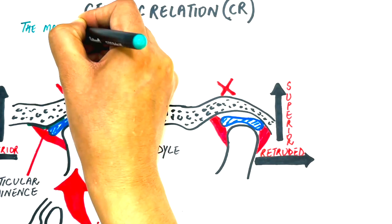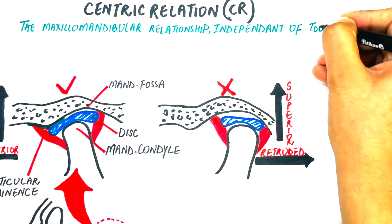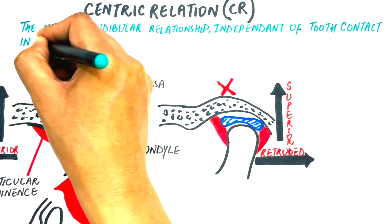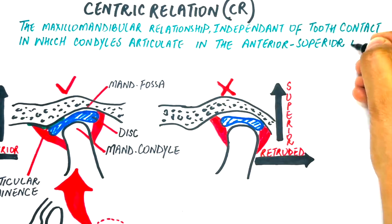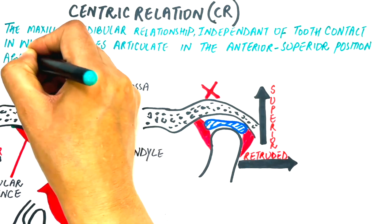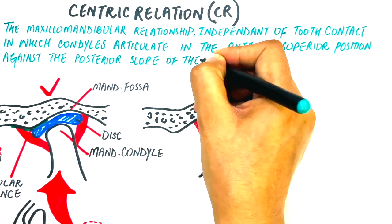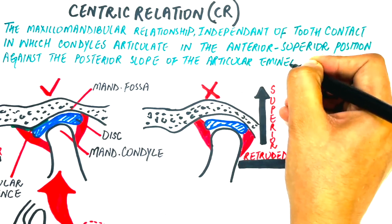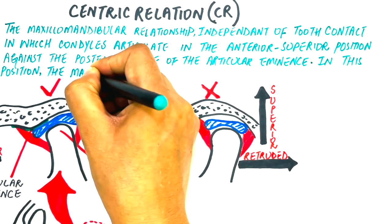According to GPT-9, centric relation is defined as the maxillomandibular relationship independent of tooth contact in which the condyles articulate in the anterior superior position against the posterior slopes of the articular eminences. In this position, the mandible is restricted to a purely rotary movement.